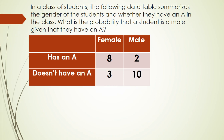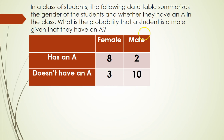The next group of problems on the Delta Math said: in a class of students, the following data table summarizes the gender of the students and whether they have an A in the class. What is the probability that a student is male, given that they have an A? This time the table was given to you in the problem.